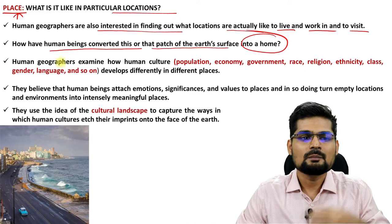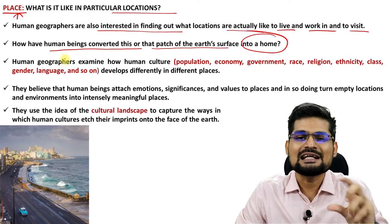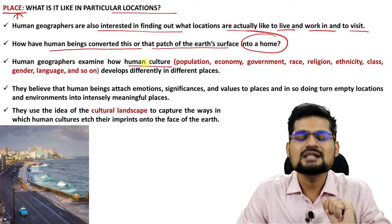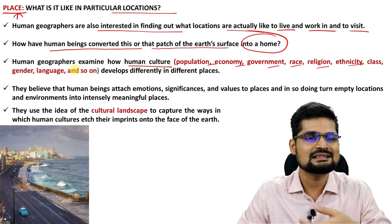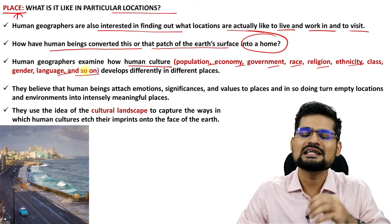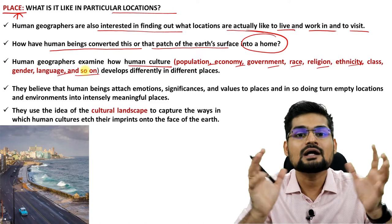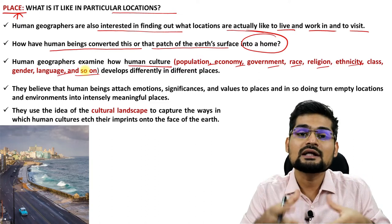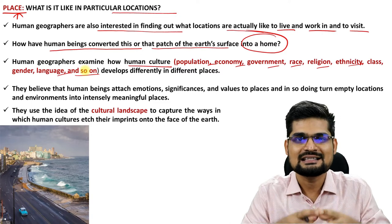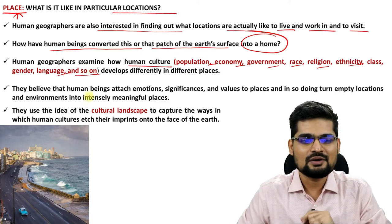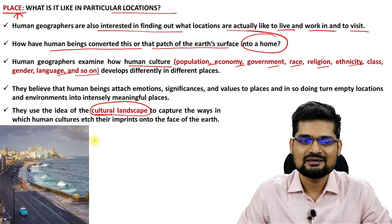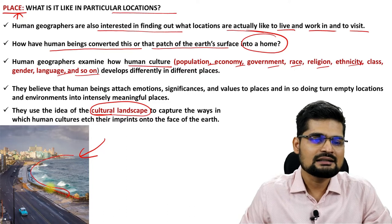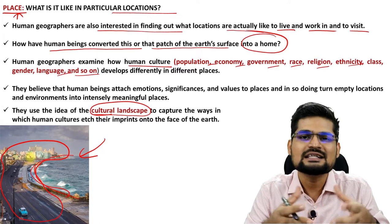Place-making is not independent of anything but is basically part of human culture. Human culture has several attributes: population, economy, government, race, religion, ethnicity, class, gender, language, and you can keep extending the list. These are the attributes that make a particular place. If you have to make a place, you need these human attributes, creations, synthesis. That's where the idea of cultural landscape is the root or key to human geography. If you observe, this is a coastal area and then you see this cultural landscape — the urban landscape — that's what is basically place-making.